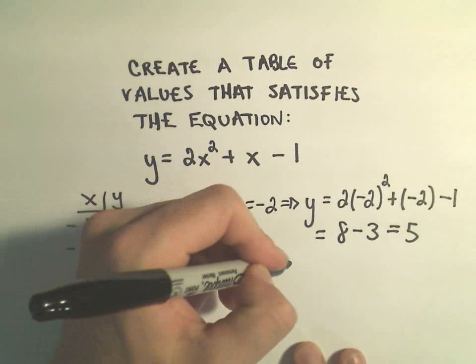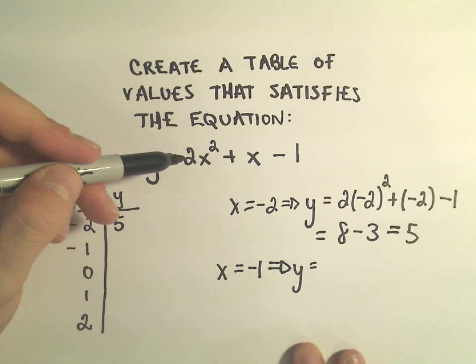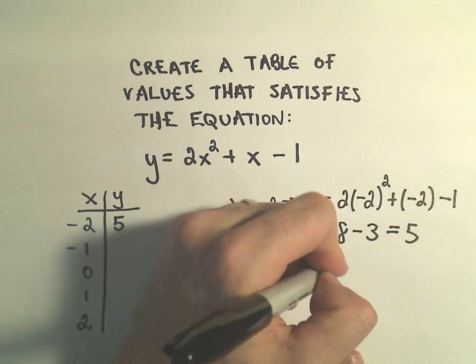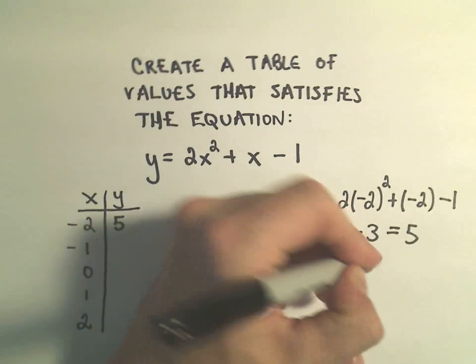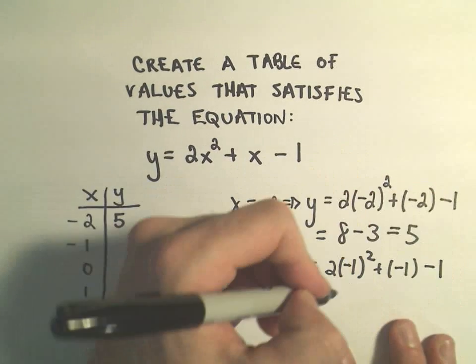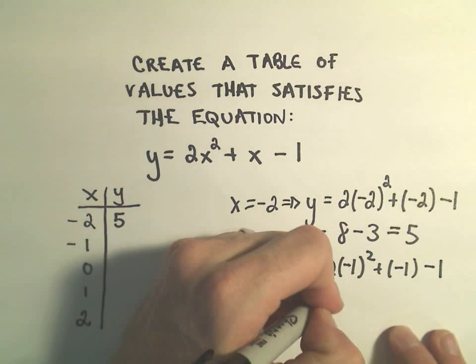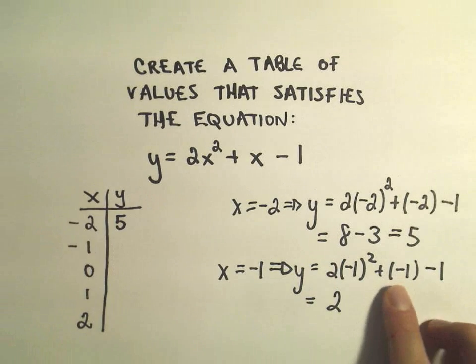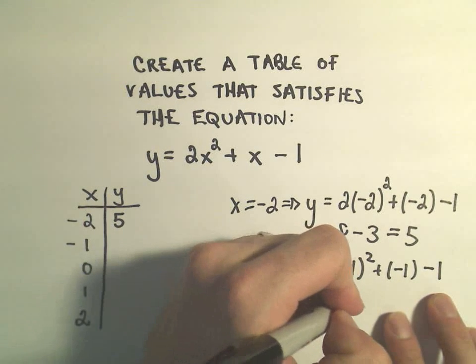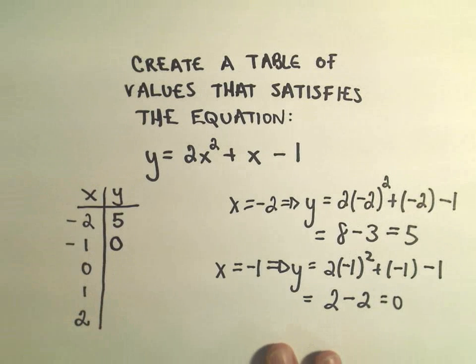Let's plug in negative 1. So again, everywhere there's an x, I'm just going to plug in negative 1: 2 times negative 1 squared plus negative 1 minus 1. Well, negative 1 times negative 1 is positive 1, positive 1 times 2 is 2, then we'll get negative 1 minus 1, which is negative 2. So it looks like when we plug negative 1 in, we get 0 out.